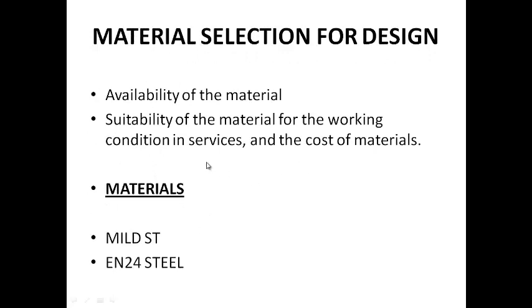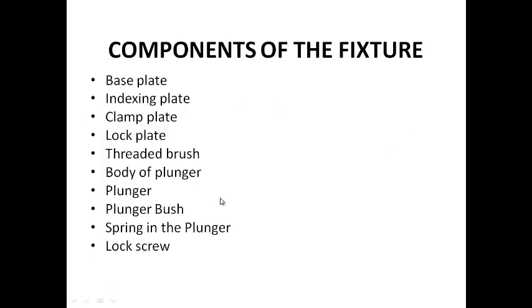Now we are going to see the design. We use available low-cost materials — mild steel and cast iron. The components of the fixture are: base plate, induction plate, clamping plate, lock plate, thread brush, body of the plunger, plunger, plunger brush, spring in the plunger, and lock screw.